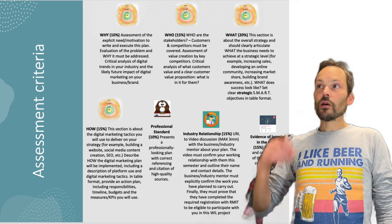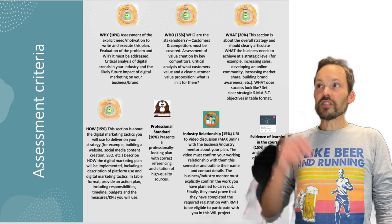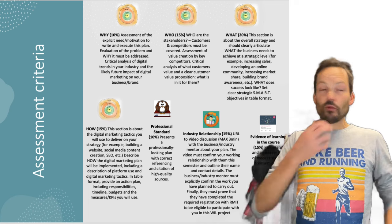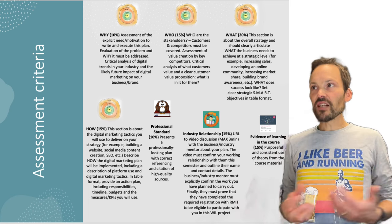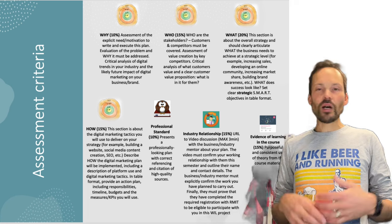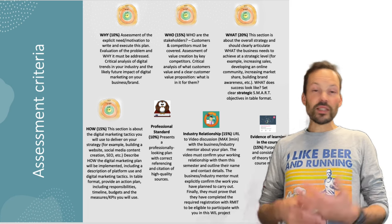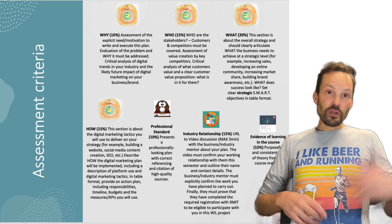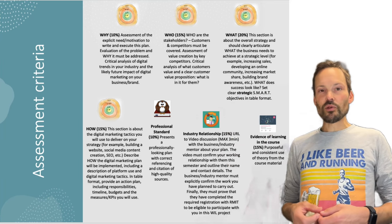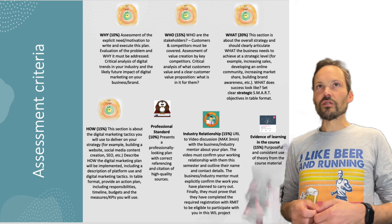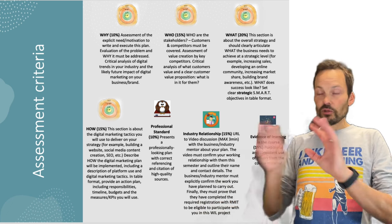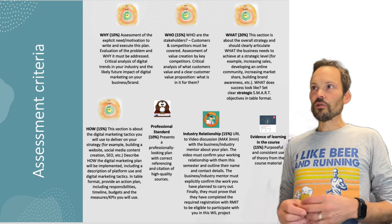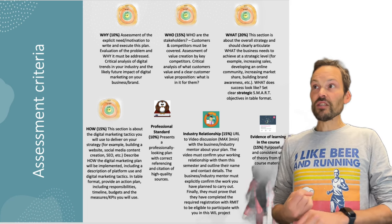That leads you to the third question: 'what' — what is it that needs to be achieved on a strategic level? For example, is it about increasing sales, building an online community, increasing market share, building brand awareness? At this level, we're not talking about using Instagram or TikTok or building a website — that's tactical. We're talking about it at a strategic level. The 'what' question covers what we need to achieve strategically and what success looks like.